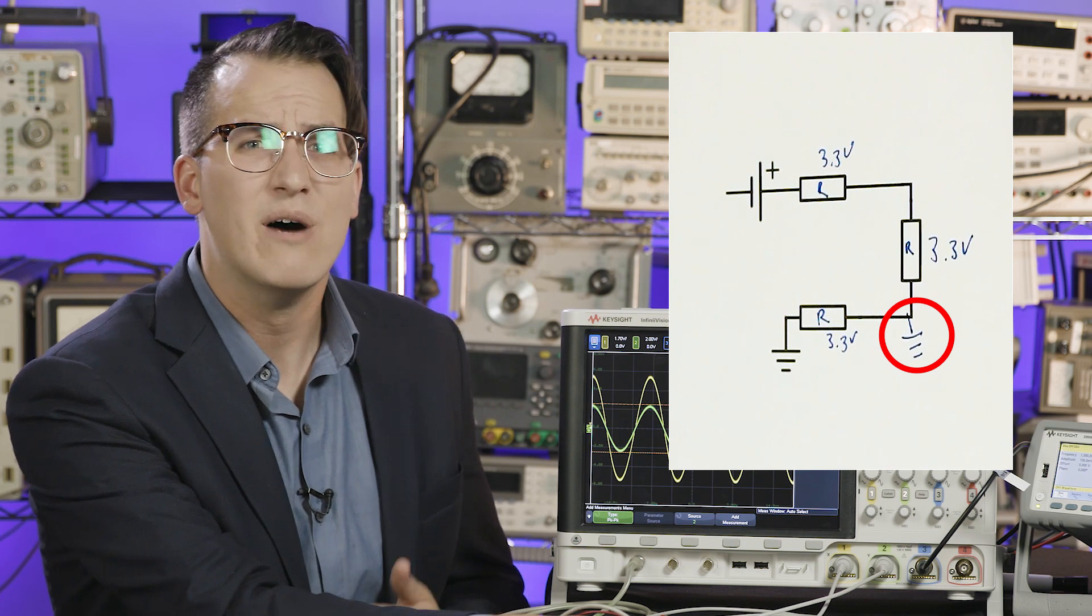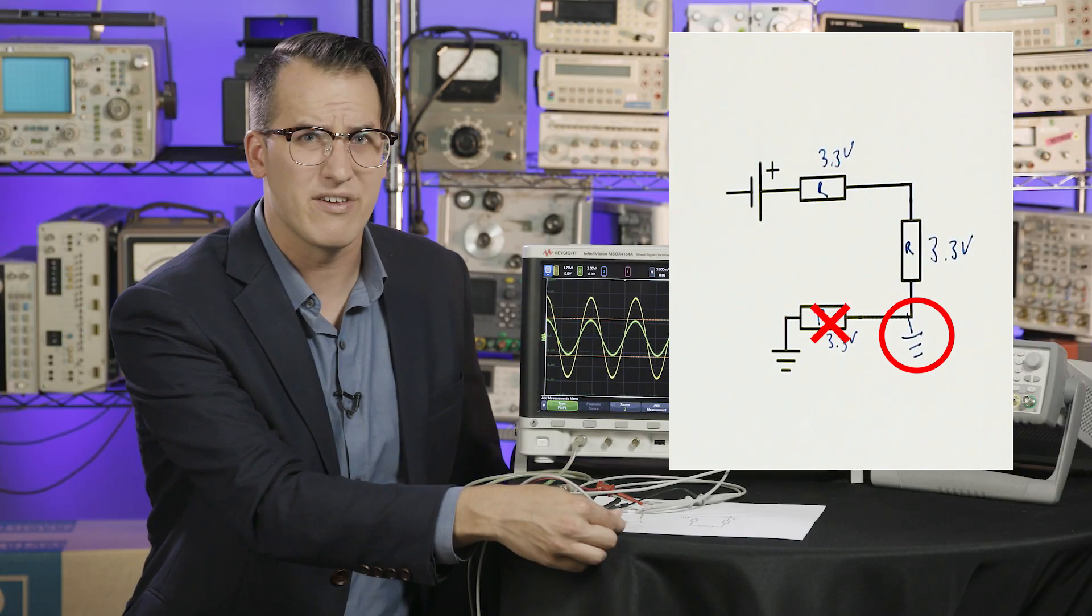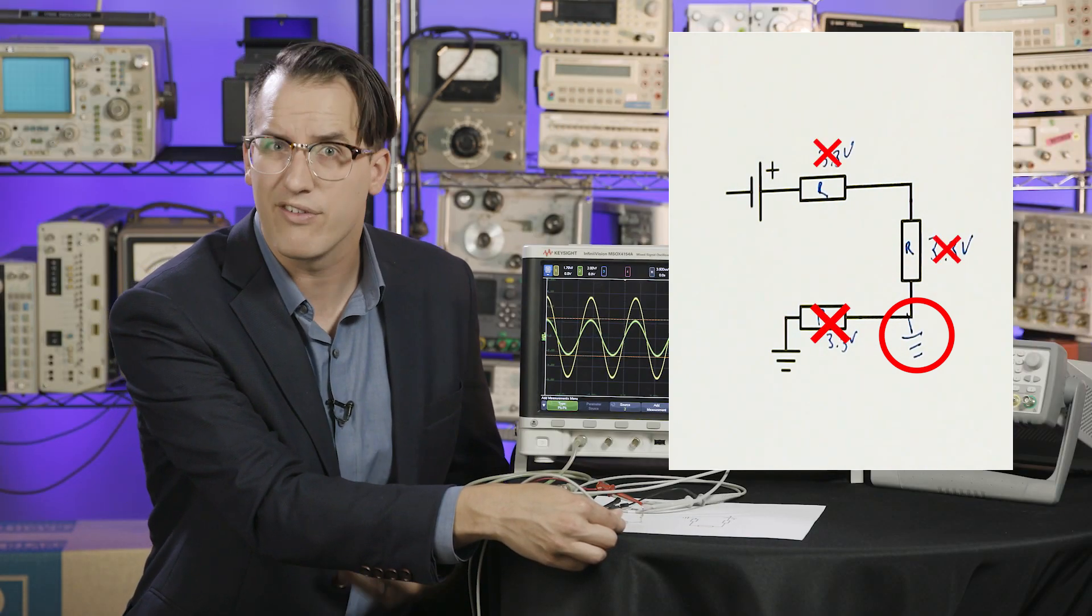Why? Well, the ground clip is connected through the scope to earth ground, so we've effectively shorted out our third resistor and now have only two resistors in series. This is all fun and games until you aren't working with a simple resistor setup. Instead, if this was sensitive equipment or these were sensitive components, we could have just blown them up.